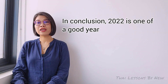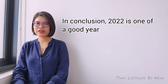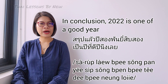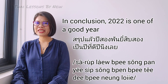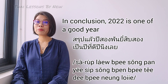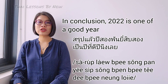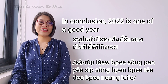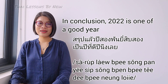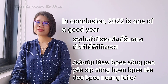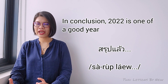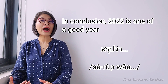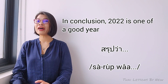The next example I grabbed from one of my friends who likes to talk about his life. By the end of the year he summarized how he felt about each year. This sentence: In conclusion, 2022 is one of a good year. When you want to summarize in conclusion and then follow with what you conclude, you use the word สรุปแล้ว — สรุป (what we were talking about) and แล้ว (already).